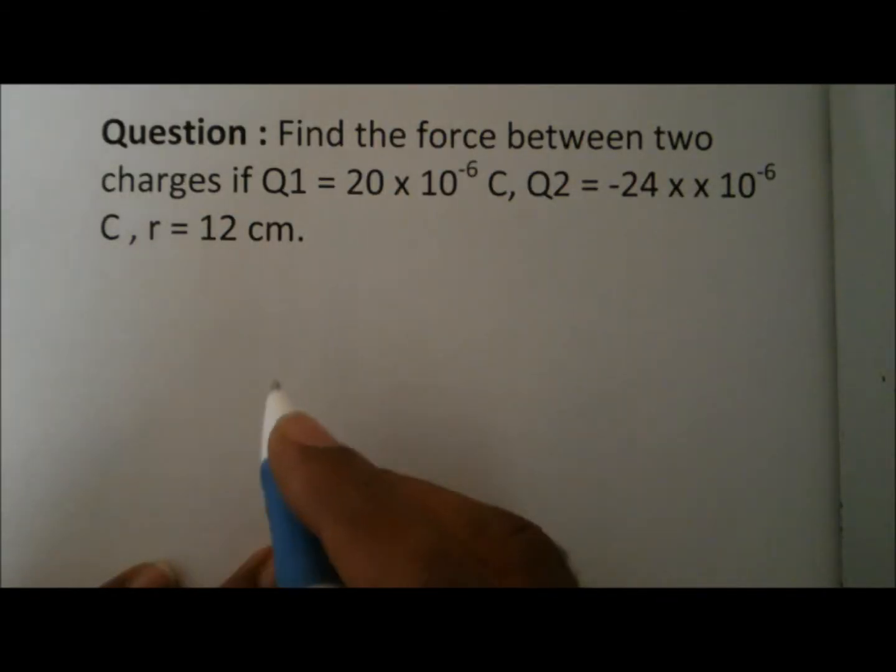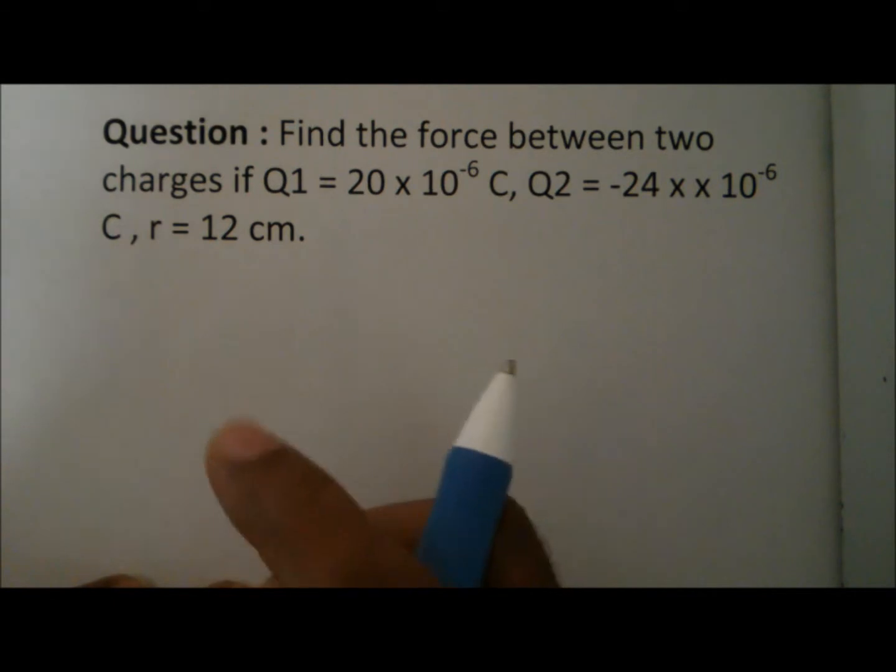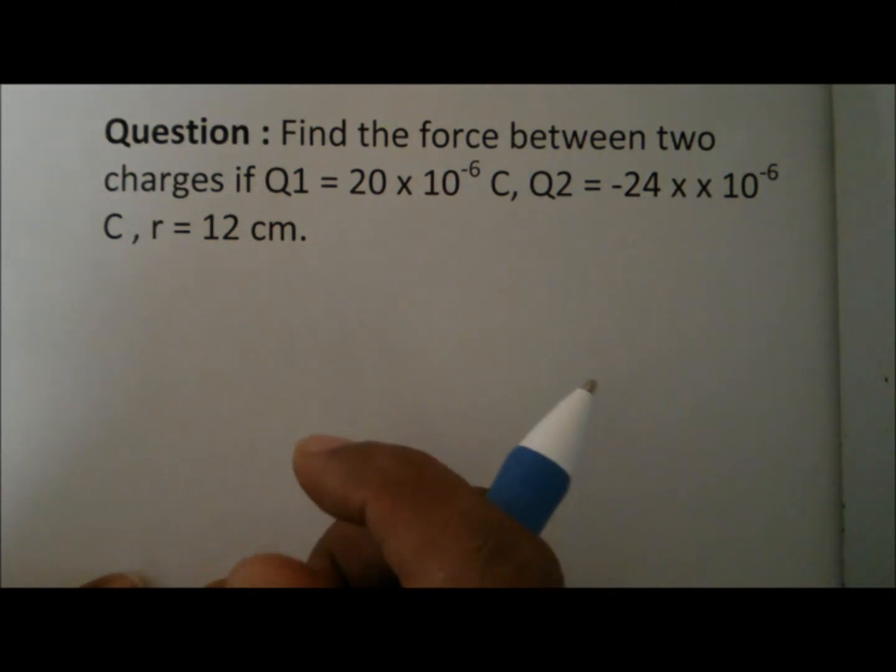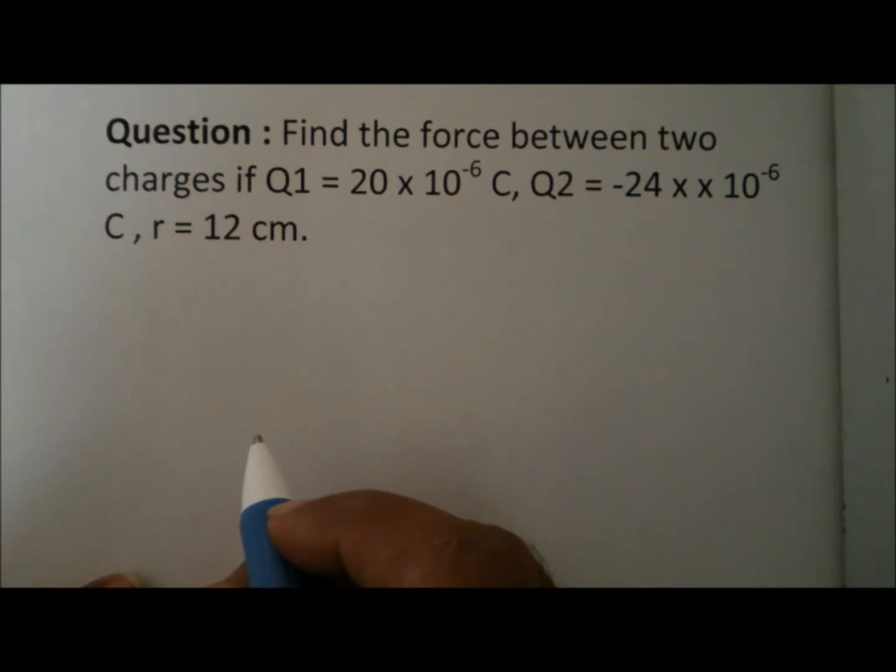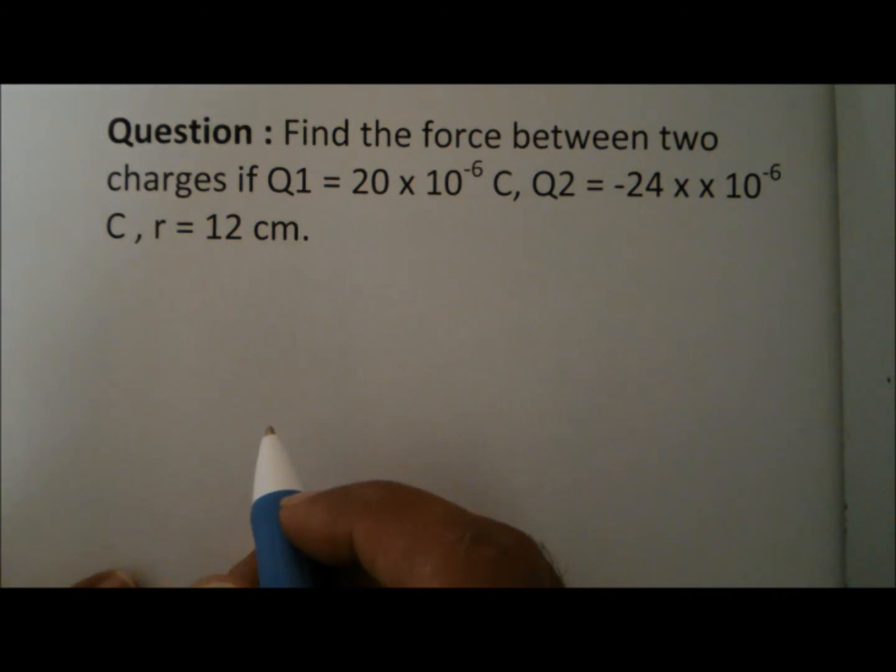This is one of the questions asked in Yahoo Answers. Find the force between two charges if Q1 equals 20 into 10 to the power minus 6 Coulomb, Q2 equals minus 24 into 10 to the power minus 6 Coulomb, and the distance between them is 12 centimeters.